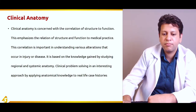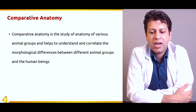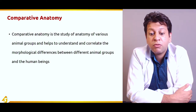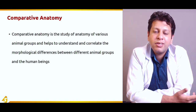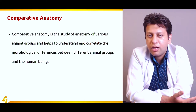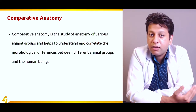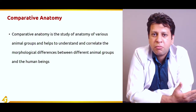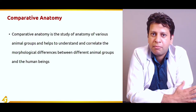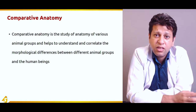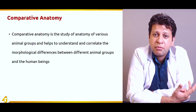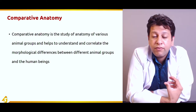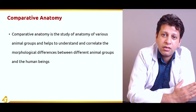Comparative anatomy is the study of anatomy of various animal groups that helps us understand the morphological differences between different animal groups and human beings. Since anatomy started as dissection of animals, and once scientists moved to dissecting dead humans they realized there are gross differences between mammalian anatomy and human anatomy, this gave birth to comparative anatomy — comparing the structures, similarities, and differences between human anatomy and the anatomy of animals.